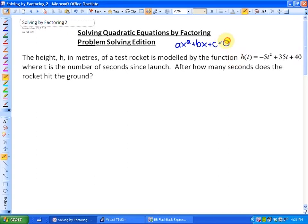However, if we read more carefully, we'll notice that what it says after how many seconds does the rocket hit the ground, that would suggest the height is equal to zero. In other words, we're going to substitute zero in for the height. So we have zero is equal to negative 5t squared plus 35t plus 40.